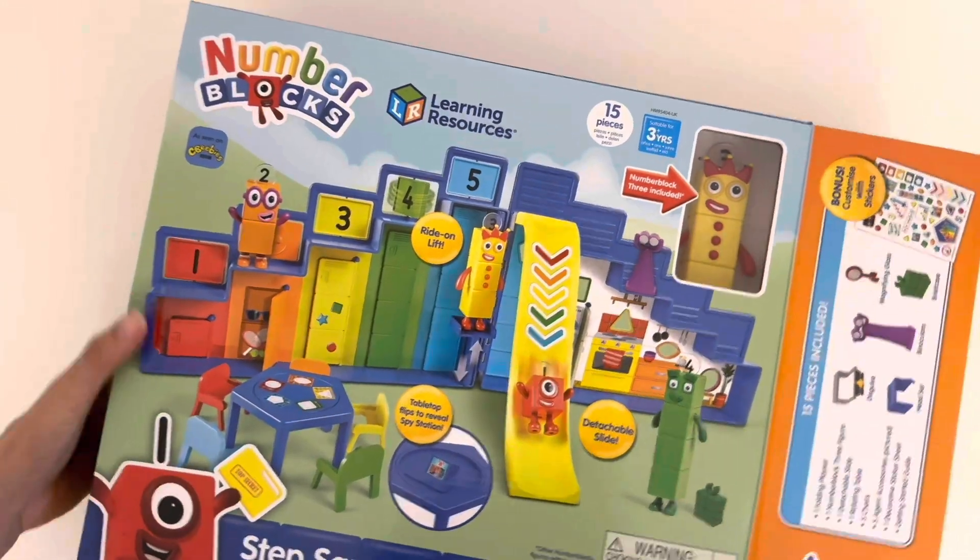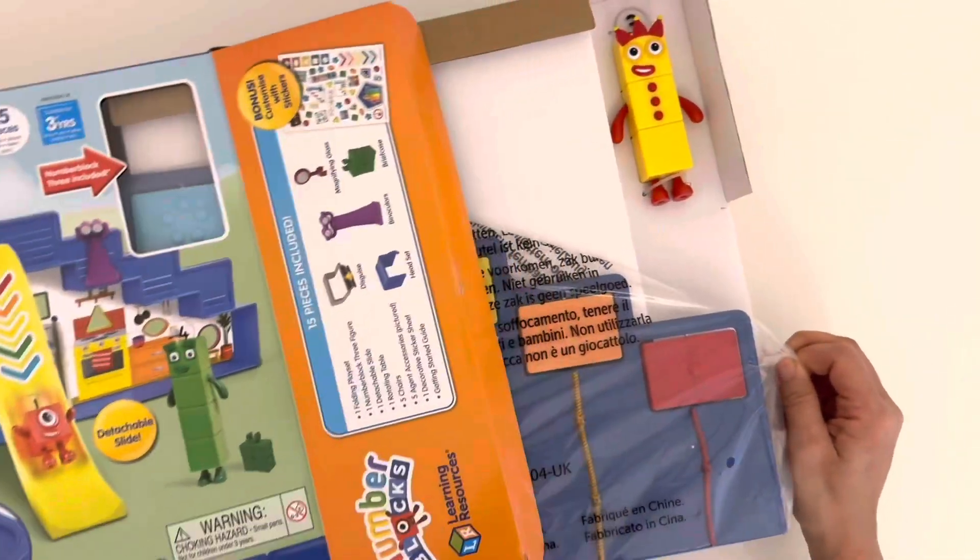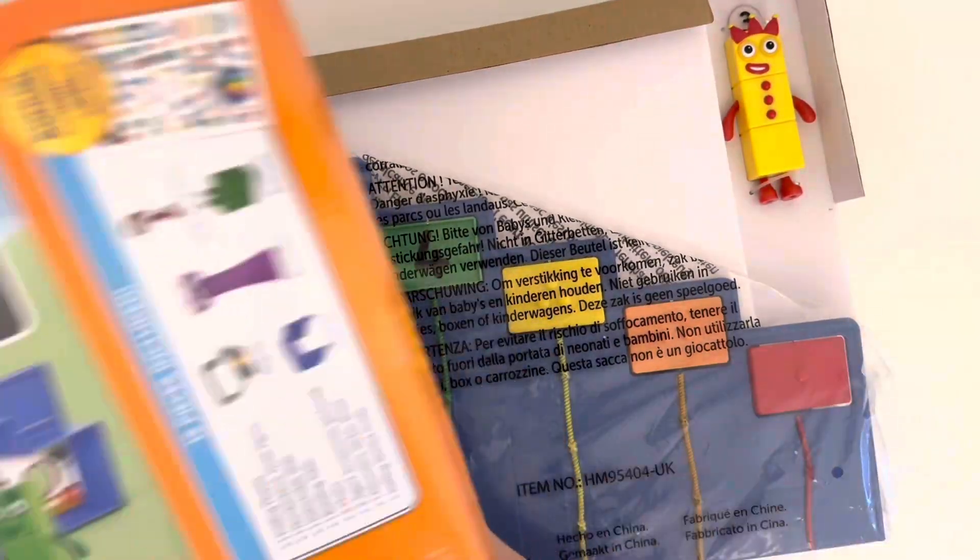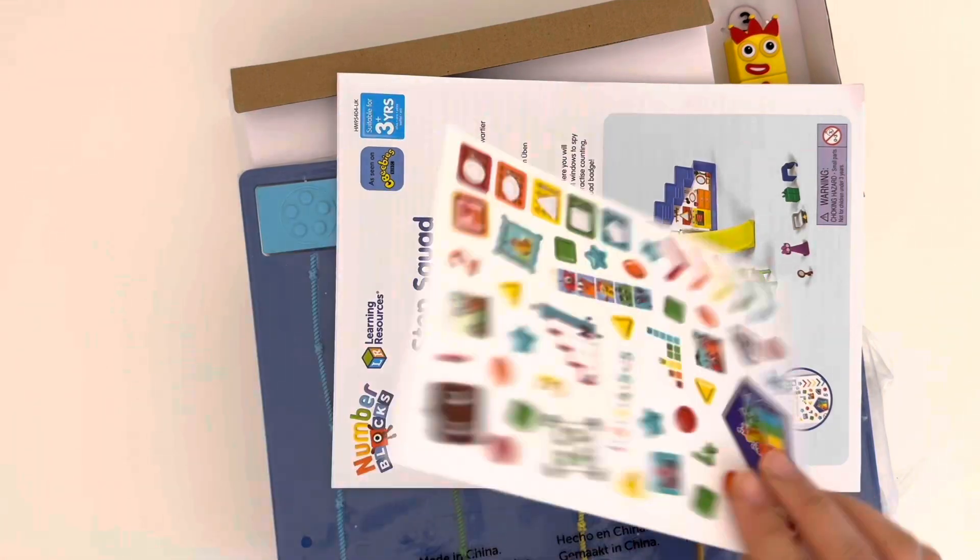And here we go. Let's see what we have inside. We have the main playset, the number block 3 friend, the activity guide, and the set of stickers.